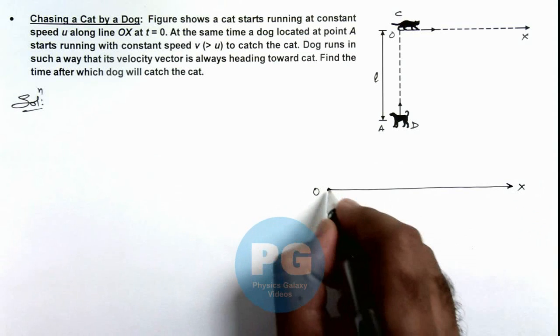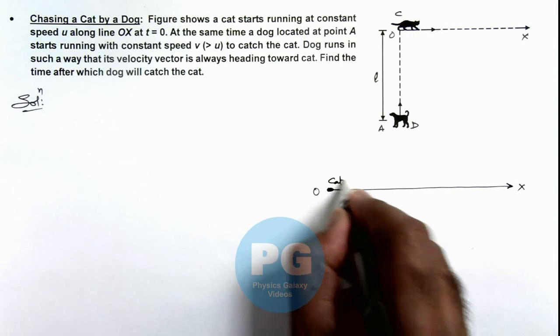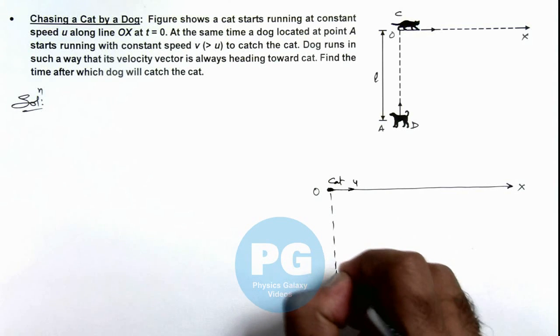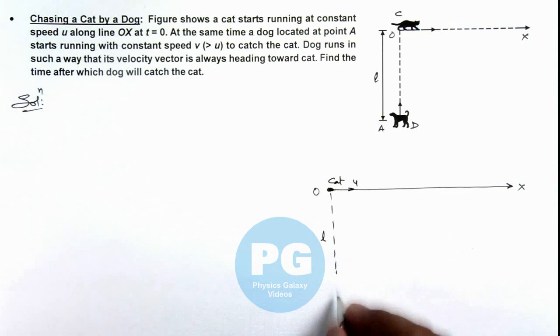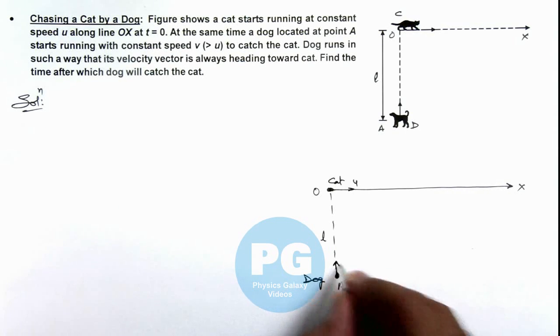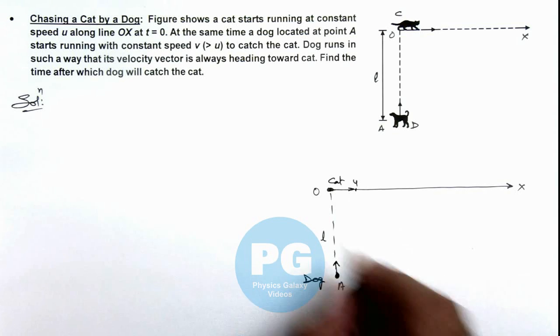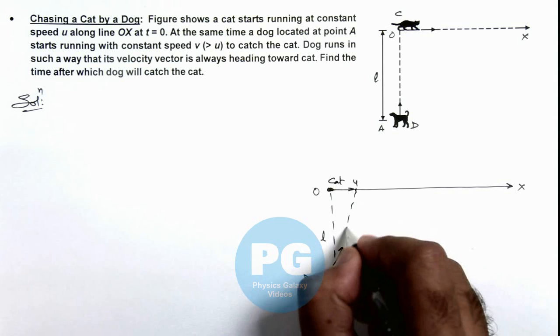This is the x direction in which this cat is running with a uniform speed u. And at a distance l in the normal direction, the dog is located at point ay and it is heading toward the cat. When cat will slightly move off, the direction of dog velocity will change, it'll be directly heading towards the cat.